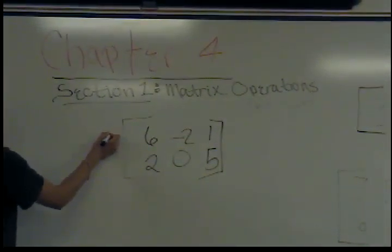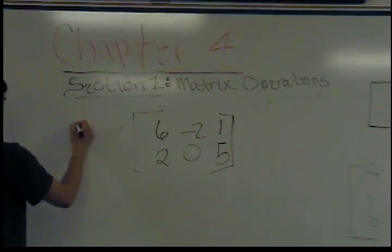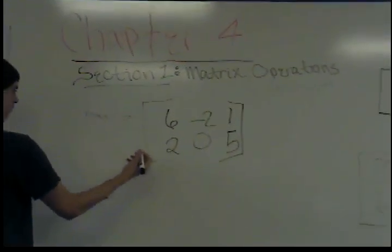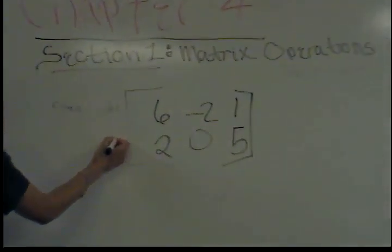The rows that go this way are called rows. For example, that's row 1, and that's row 2.